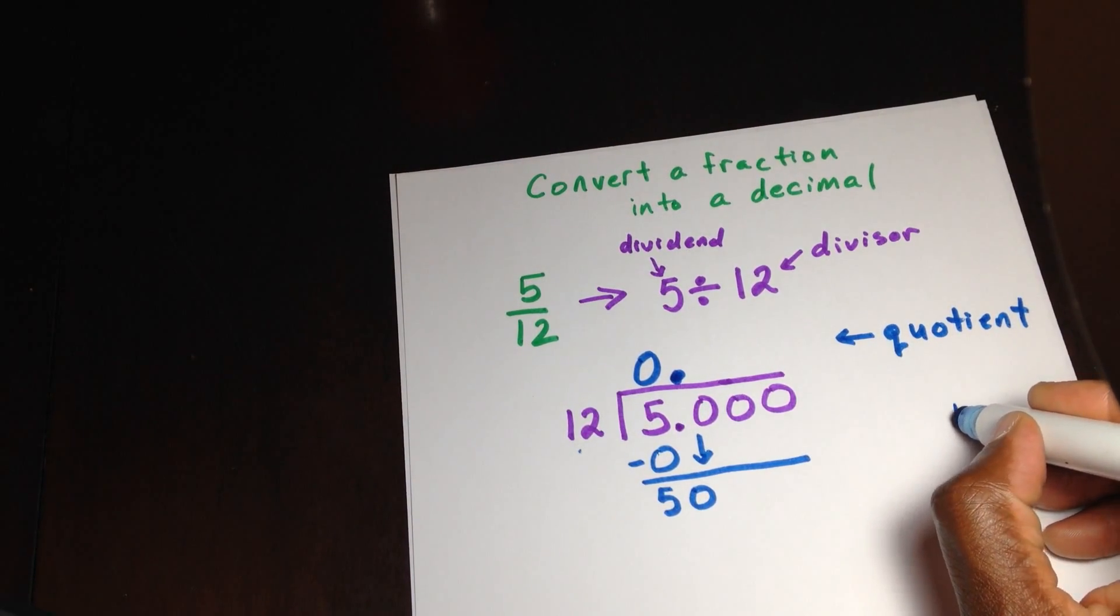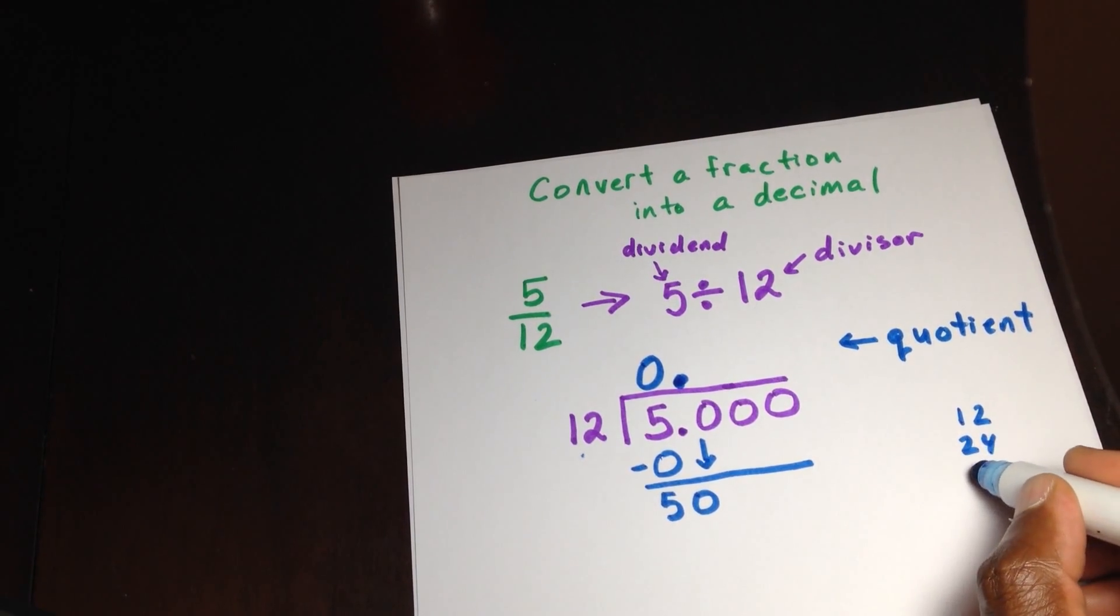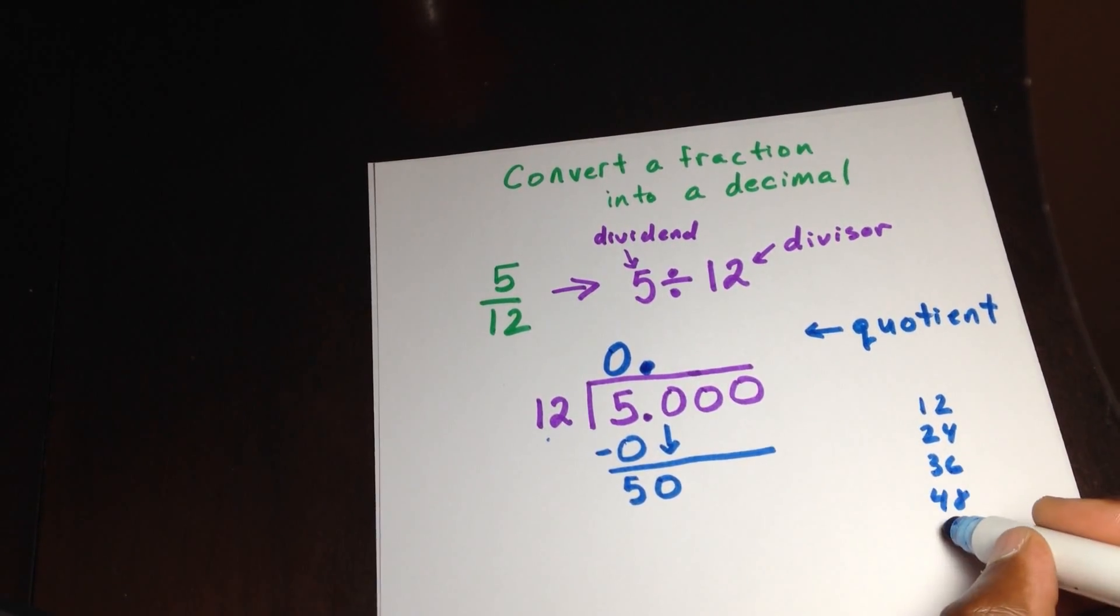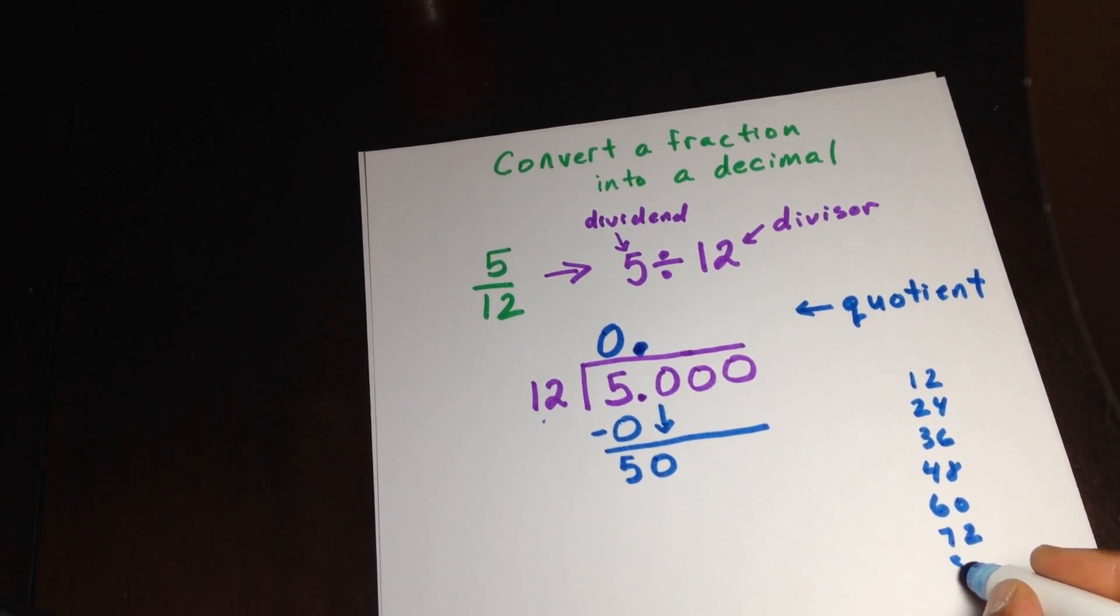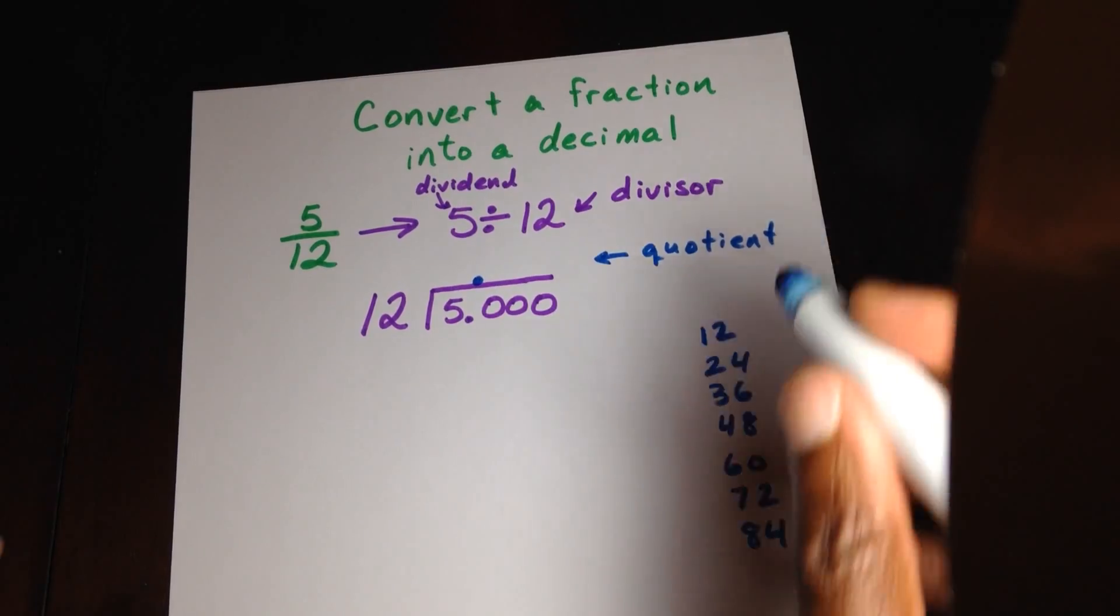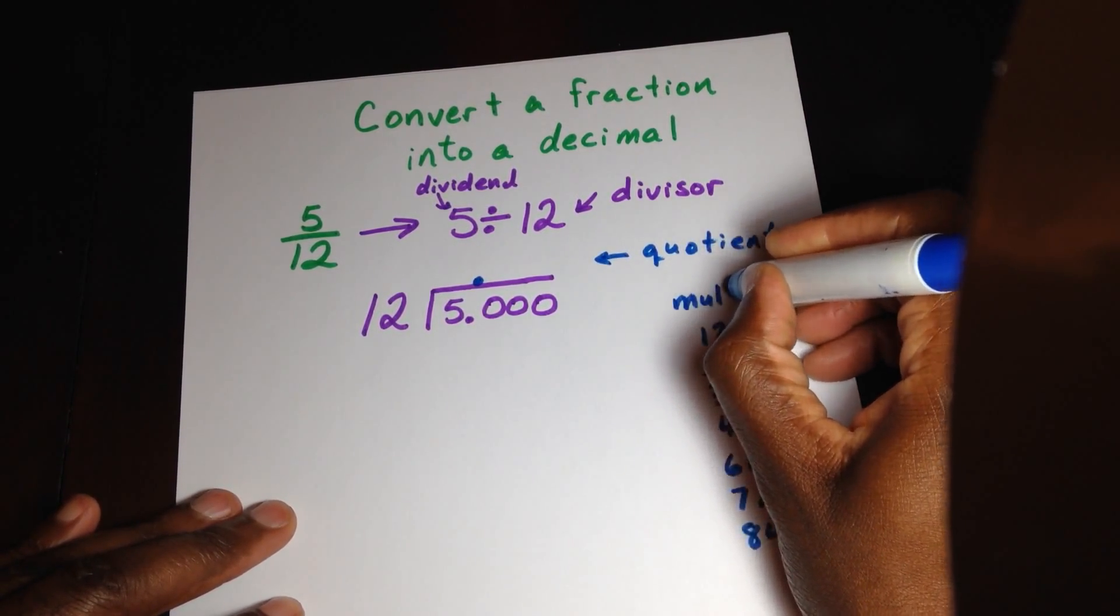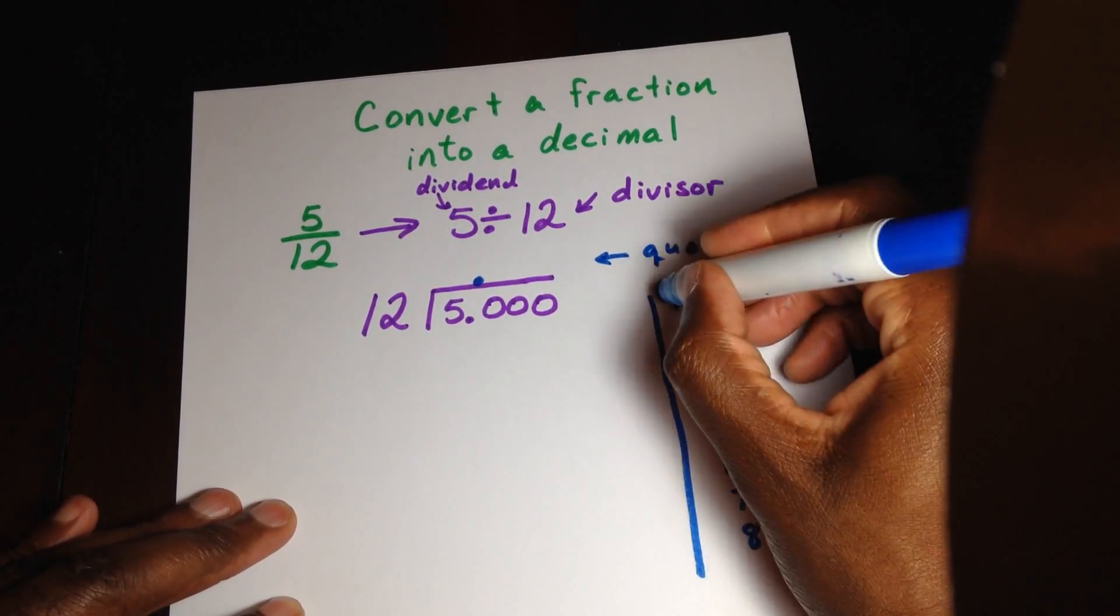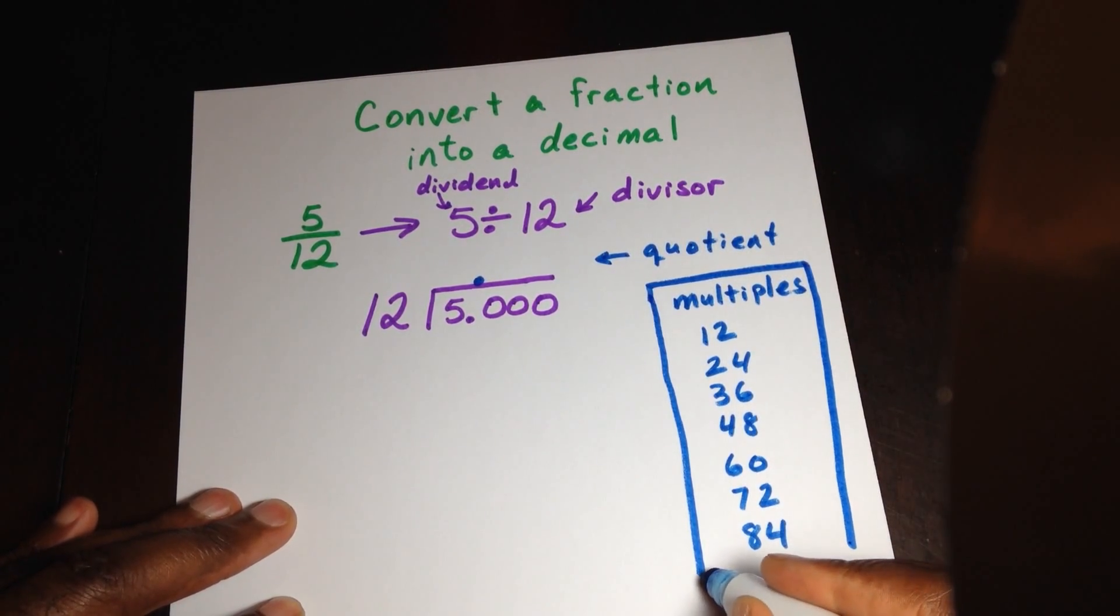So in other words, if I write the multiples of 12 here, which is 12, 24, another 12 will be 36, another 12 will be 48, another 12 would be 60, another 12 would be 72, another 12 would be 84. So now we have here the multiples of 12. And you can use these to help you do the division.